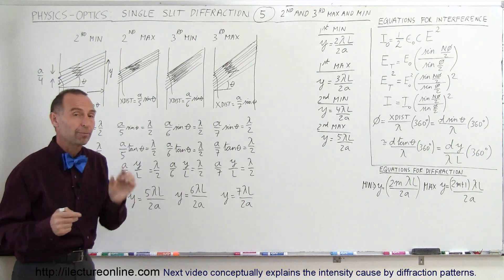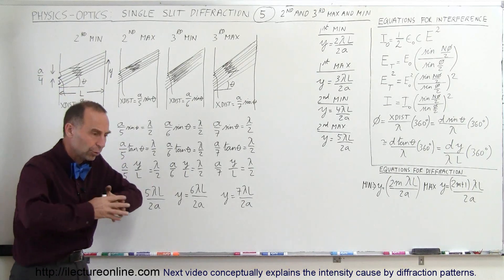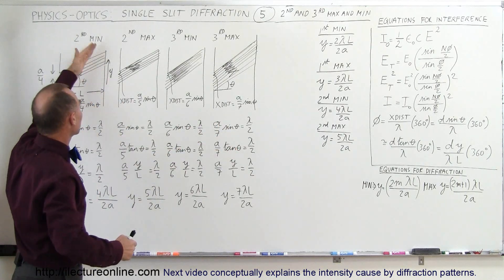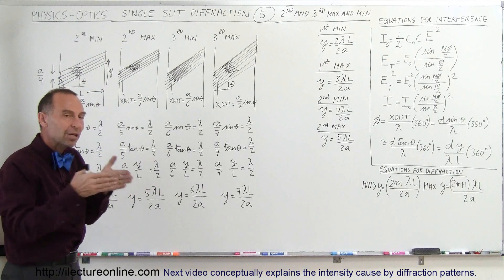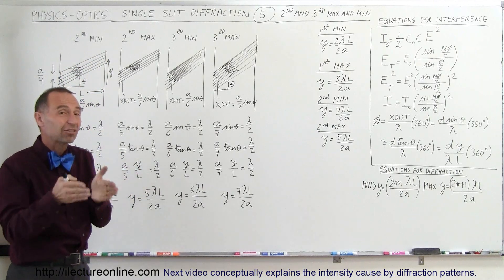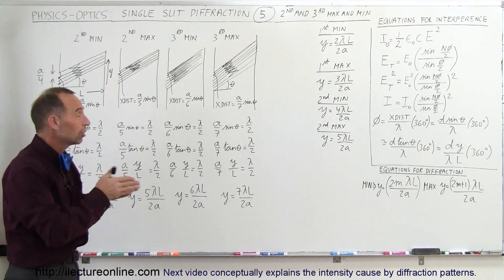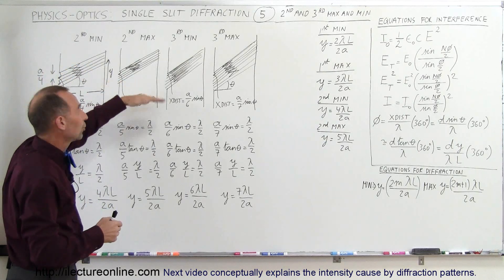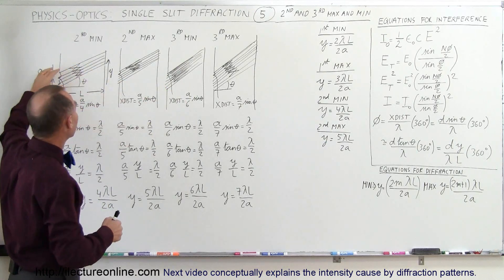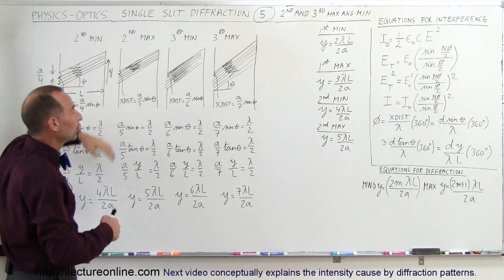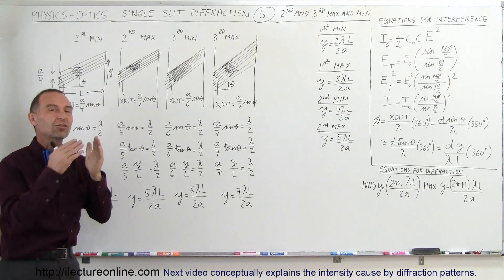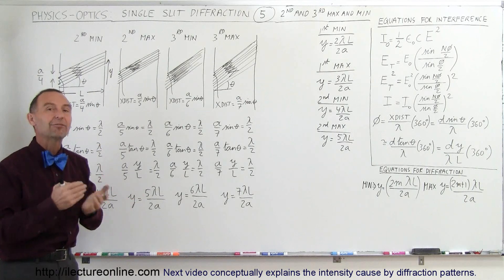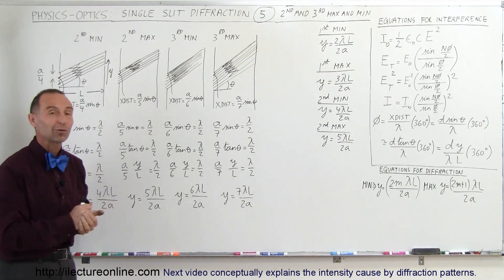Diffraction patterns are formed by a single slit. The light goes through and bends in all directions, and at various locations on the screen you have different combinations of beam portions cancelling out. Sometimes some portions make it through and create a maximum; in other cases all of it is destroyed through destructive interference, giving a dark spot. That's what we call a diffraction pattern, and that's how we find those locations.